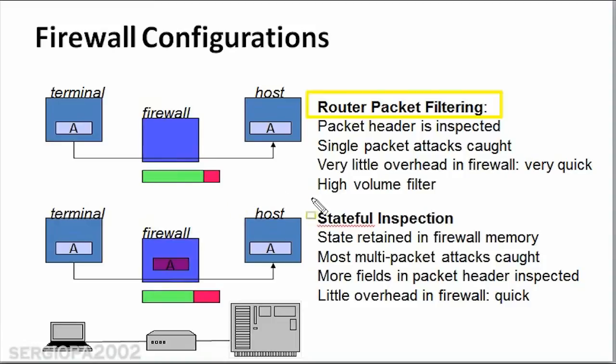The next type is stateful inspection firewalls. It's very similar to packet filtering — it also analyzes the header of the package, but this time more completely. It checks more fields of the data header, not all of them, but more than packet filtering firewalls. This creates a little bit more overhead, making it slightly slower, but it's still very quick. Most fields in the header are inspected, but not all, and most multi-packet attacks are caught.